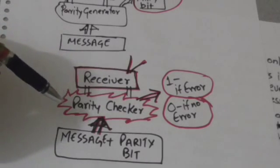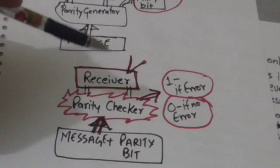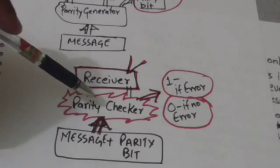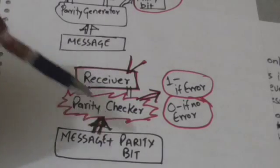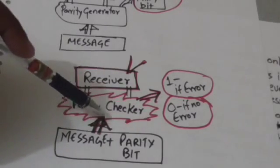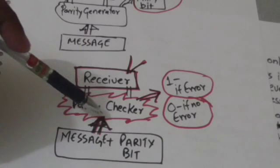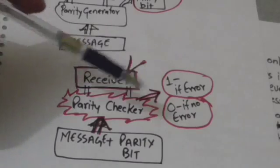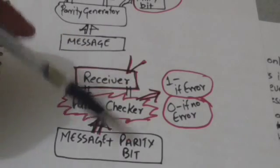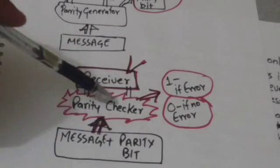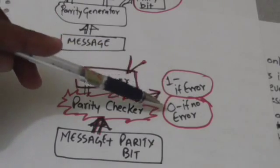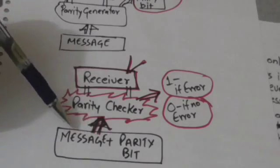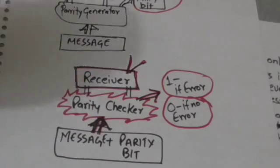At the receiver, there is a combinational circuit called a parity checker. The parity checker takes the received message including the parity bit as input, and it gives output 1 if some error is found, and output 0 if no error is found in the message including the parity bit.